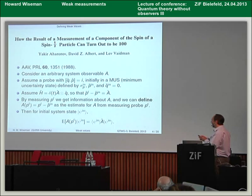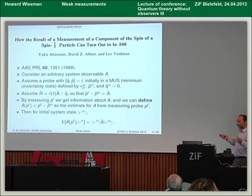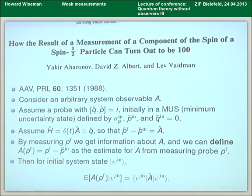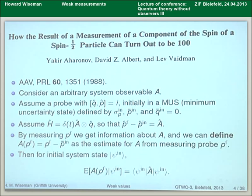So, weak values — what are they? It all started in this PRL back in 1988, with the very provocative title 'How the result of a measurement of a component of the spin of a spin-half particle can turn out to be a hundred.' Deliberately provocative. So how can it turn out to be a hundred? I'm going to use a slightly different notation from what they used, to try to explain it as best I can. Instead of just talking about a spin-half particle, let's think about an arbitrary system observable A.